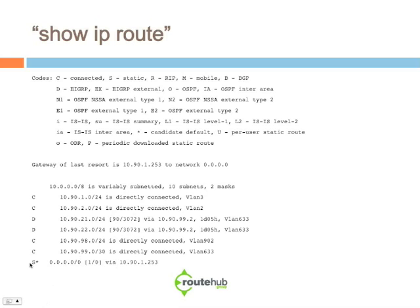The last entry shows S with a star, meaning a static route that is also the default gateway. All-zeros (0.0.0.0) reflects the default gateway. The administrative distance for a static route is 1, with no particular metric. The default gateway points to 10.90.1.253, matching the gateway of last resort shown at the top. This is how you interpret and read the routing table — it's very useful for understanding what routes you're receiving and which path traffic should take.